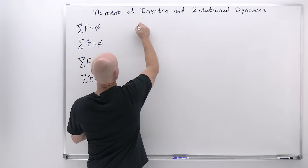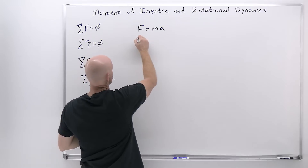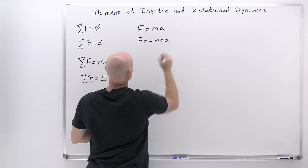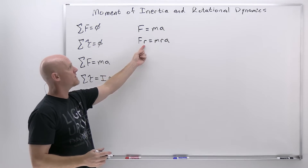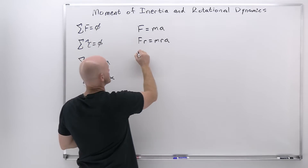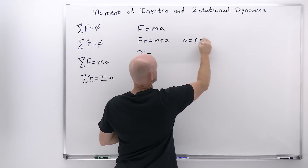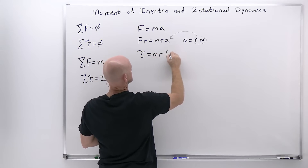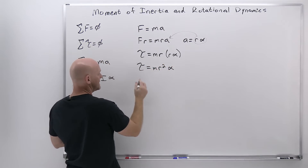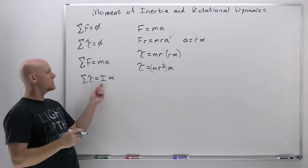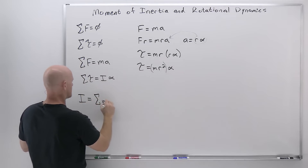Let's see how we derive this from Newton's second law. Starting with F = ma, we multiply both sides by the position vector R, analogous to lever arm, giving Fr = mRa. Force times lever arm is torque, so we now have torque on the left side. We also know that a = R times alpha, so substituting R·alpha in for a gives us torque = mR²·alpha. It is that quantity mR² that is the moment of inertia.